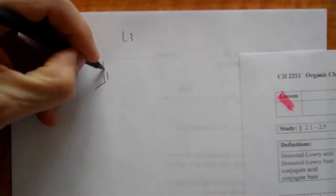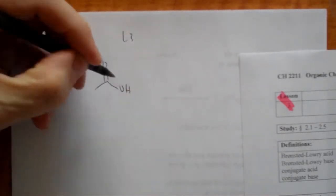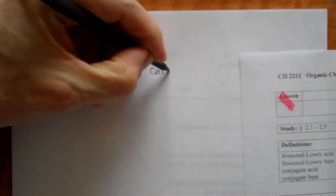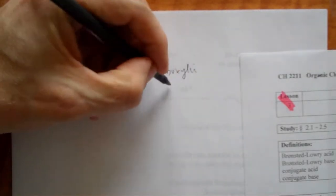An organic acid has the general structural formula of this, and we call it a carboxylic acid.